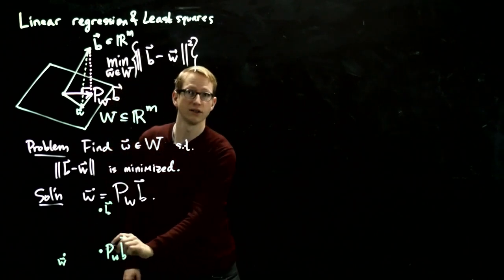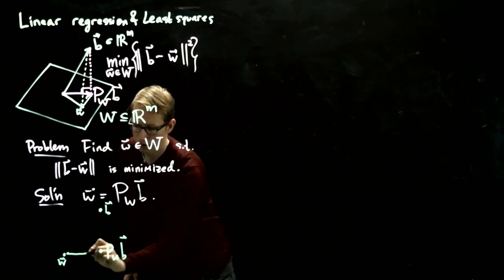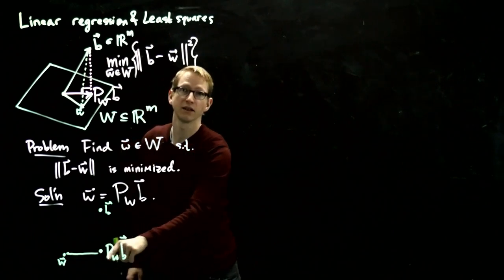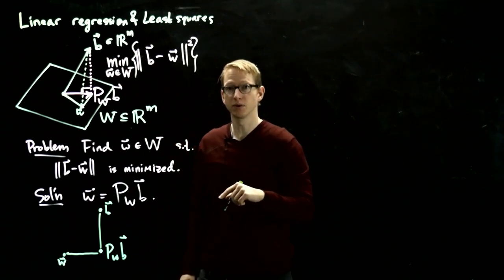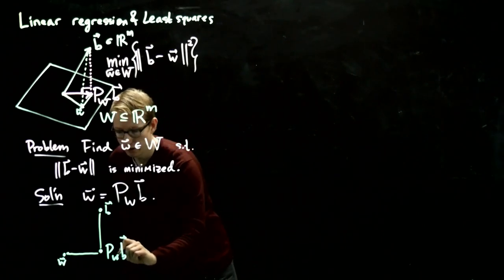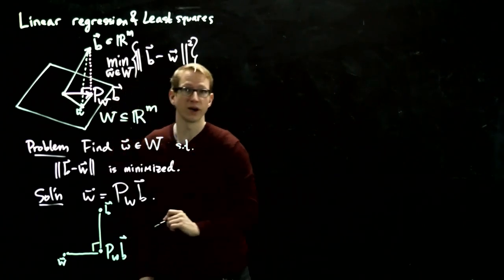These two vectors are in W, and so this line connecting them is also in W. The vector b is perpendicular to the subspace W, and therefore this angle is a right angle.